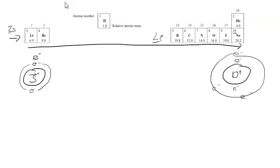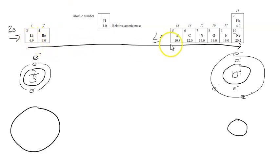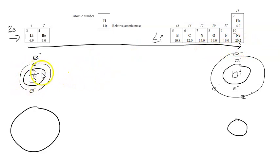But what actually happens is that lithium would have an atomic radius of, say, that large, and neon would have an atomic radius that is smaller. So why is it that as we go across a period of the periodic table, the atomic radius decreases? The key thing is that we've increased the number of protons as we've gone across the period — from three protons in the nucleus to ten protons in the nucleus — so this increases the nuclear charge.